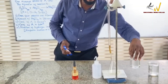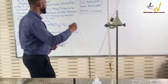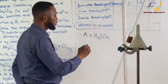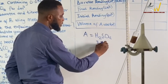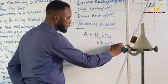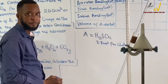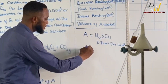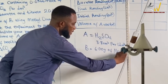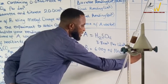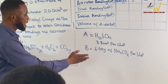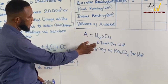Now, you were given that solution A is the concentrated acid — taking 3.8 cm³ of this concentrated acid and making it up to one dm³ of distilled water. Solution B is six grams of sodium carbonate made up to one dm³ with distilled water. These are the parameters given.